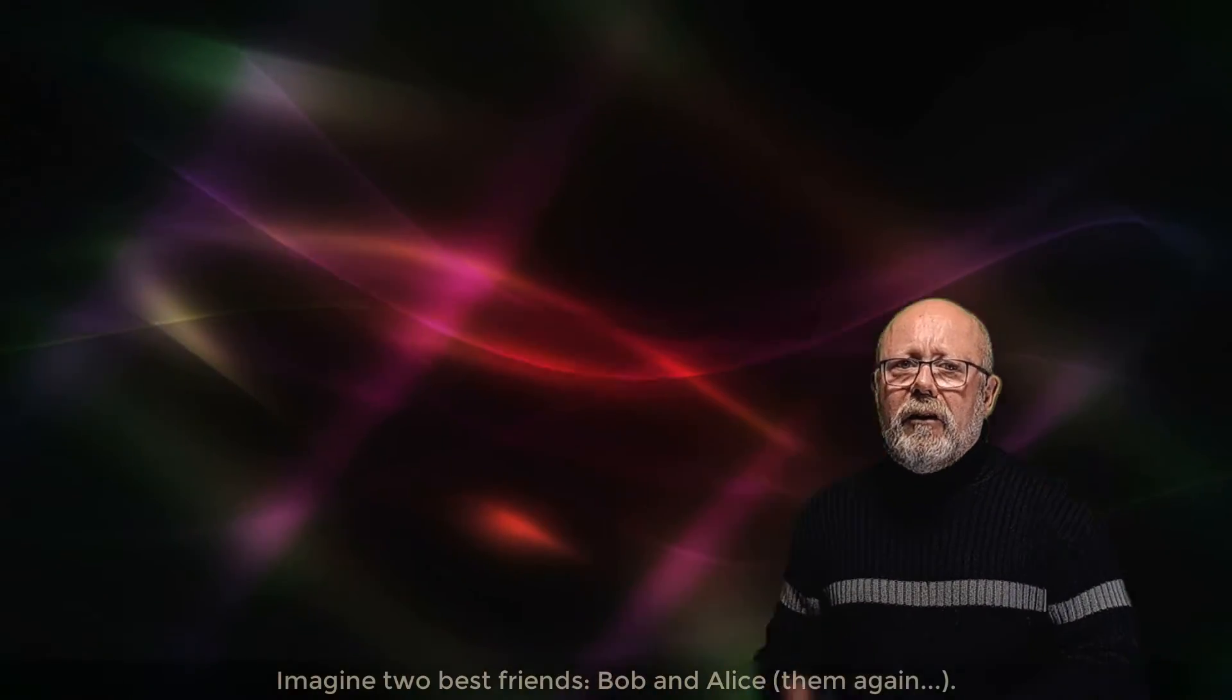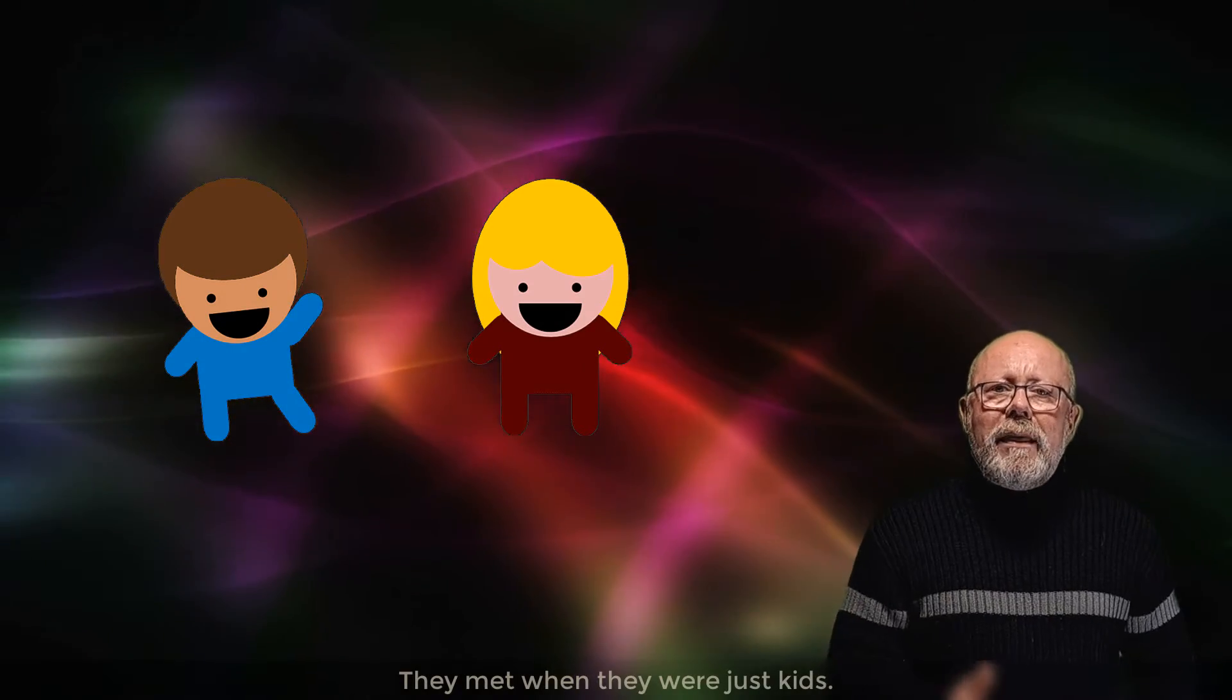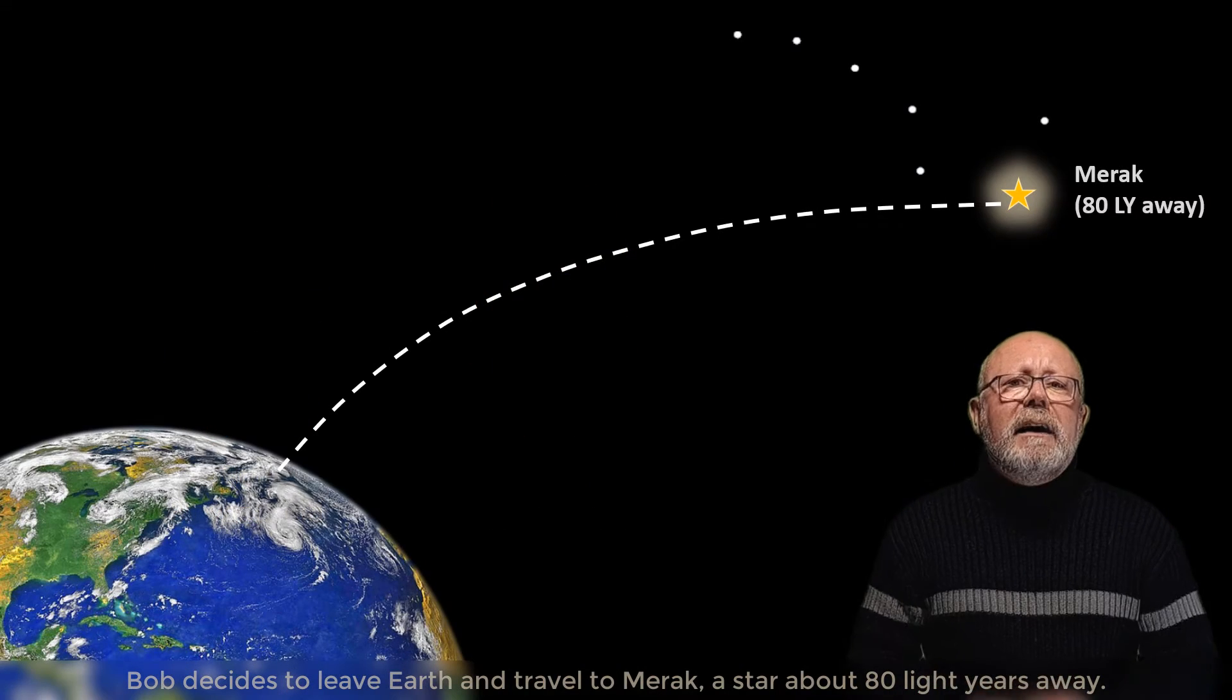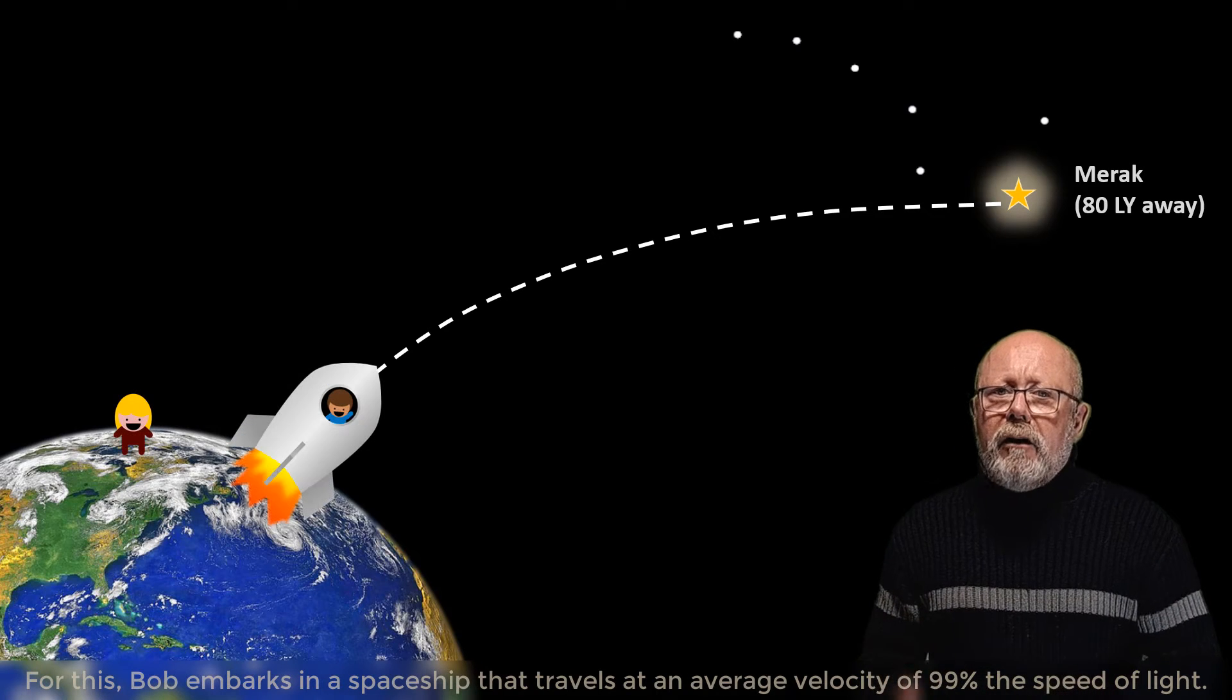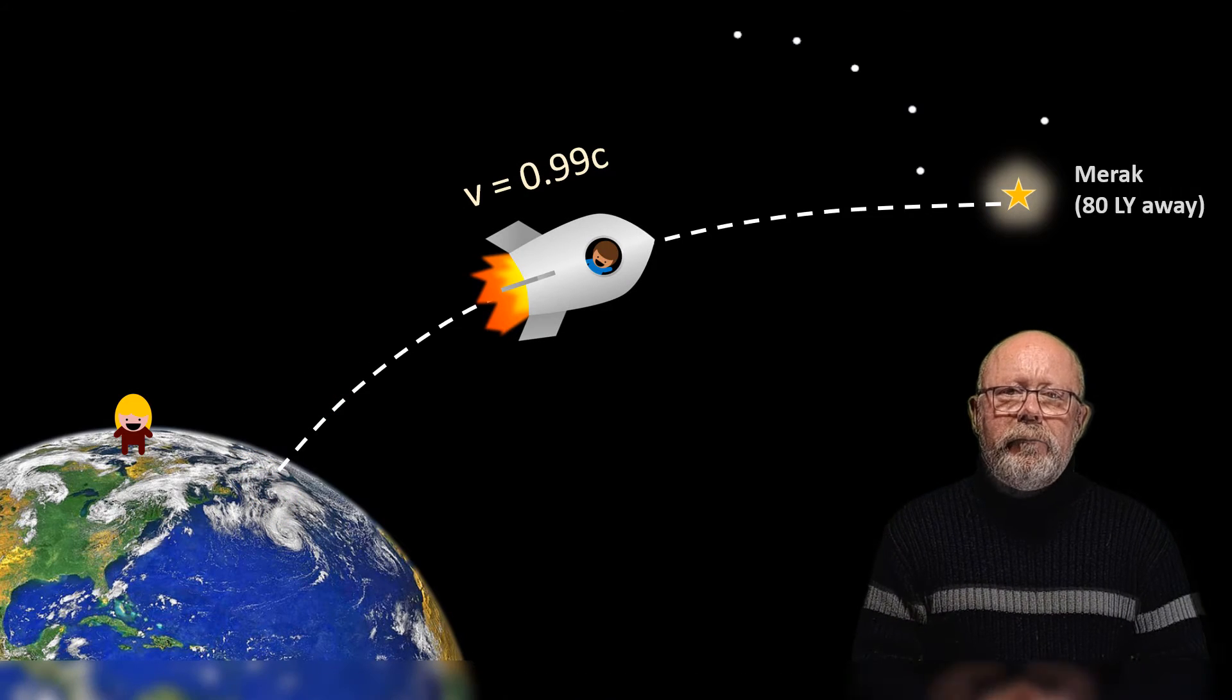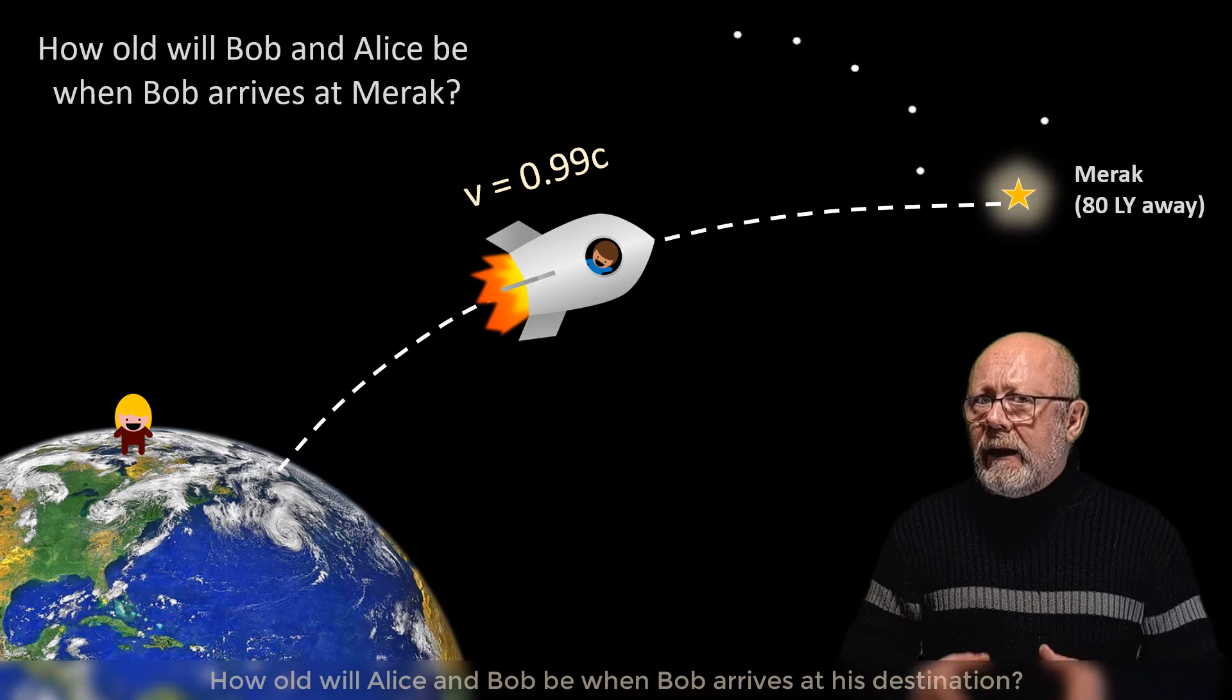Let's illustrate this. Imagine two best friends, Bob and Alice. Them again. They met when they were just kids. Today, both are 30 years old. Bob decides to leave Earth and travel to Merak, a star about 80 light years away. For this, Bob embarks on a spaceship that travels at an average velocity of 99% of the speed of light. How old will Alice and Bob be when Bob arrives at his destination?